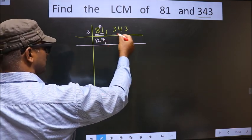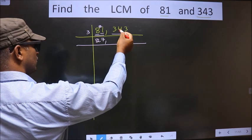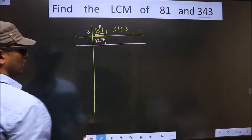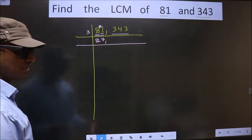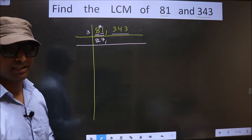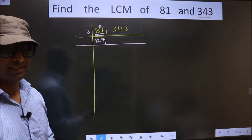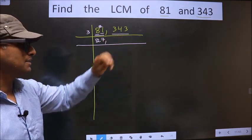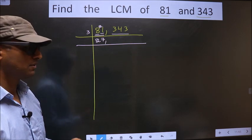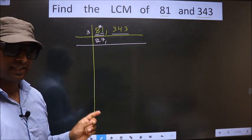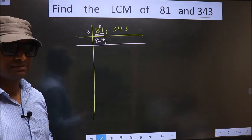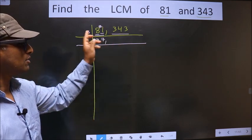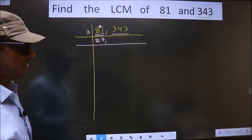The other number is 343. To check whether this is divisible by 3 or not, we add the digits. That is 3 plus 4 plus 3, we get 10. Is 10 divisible by 3? No. So this number is also not divisible by 3.